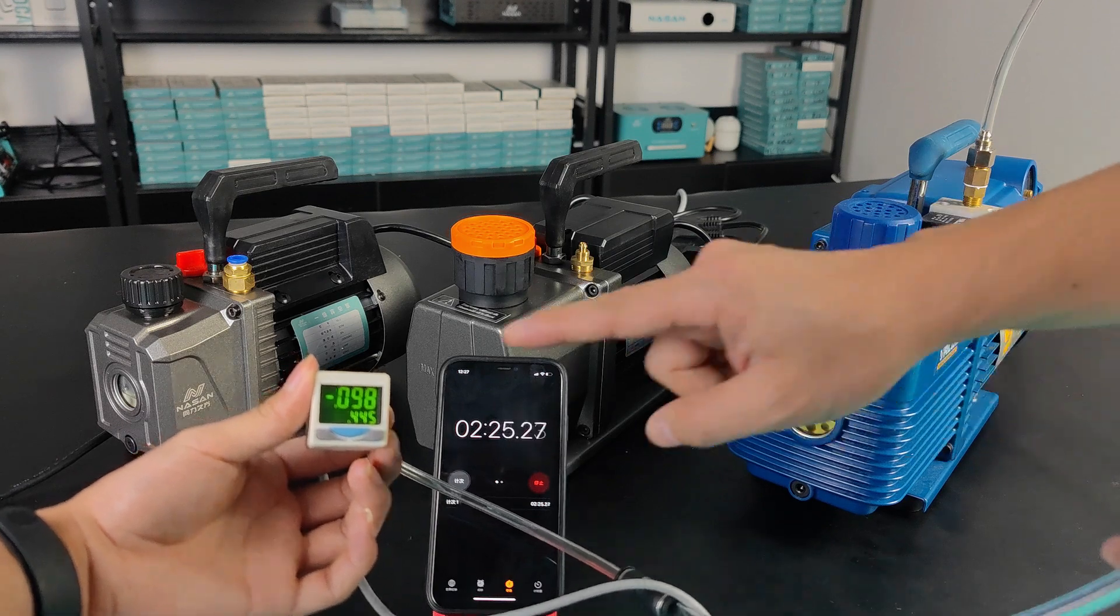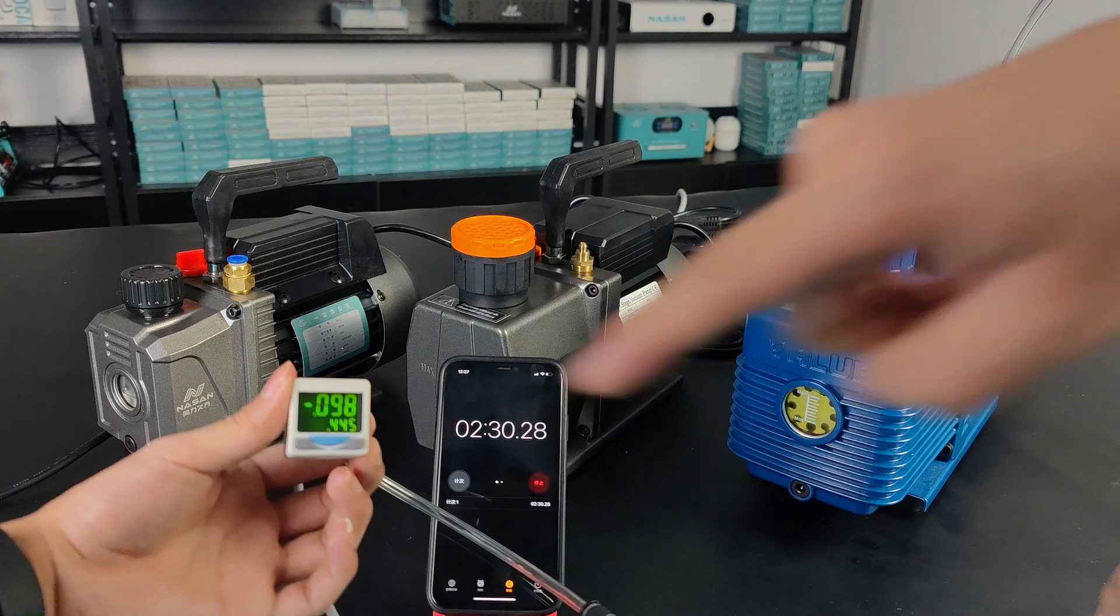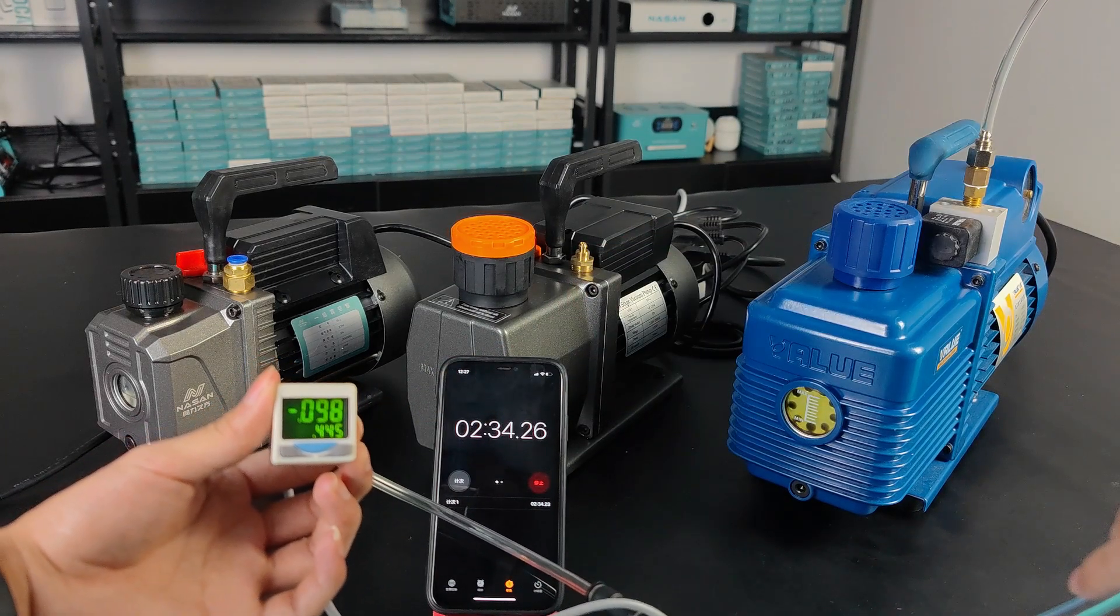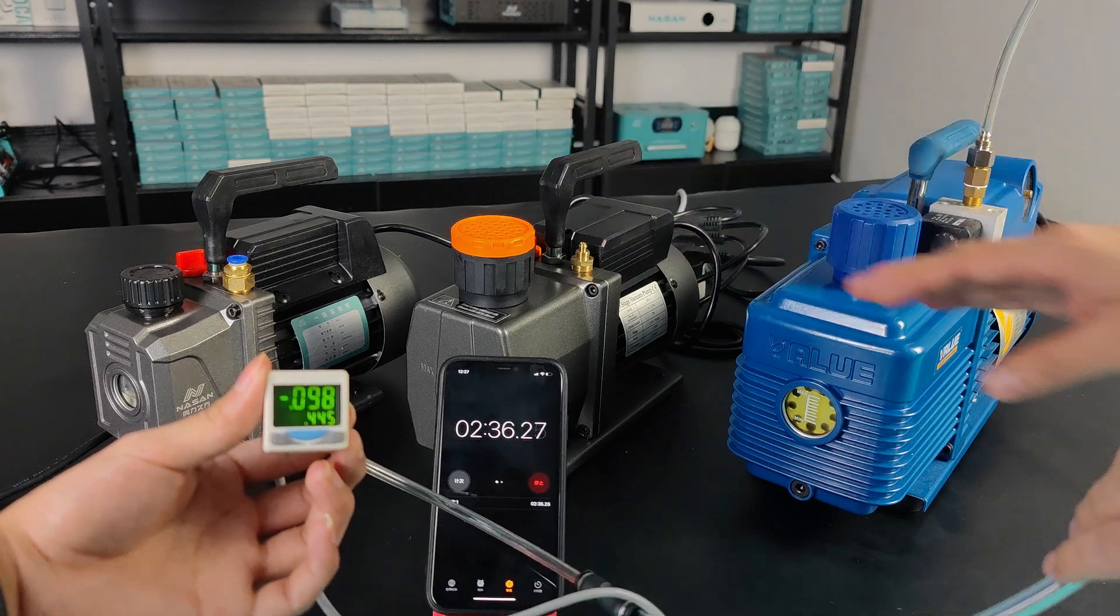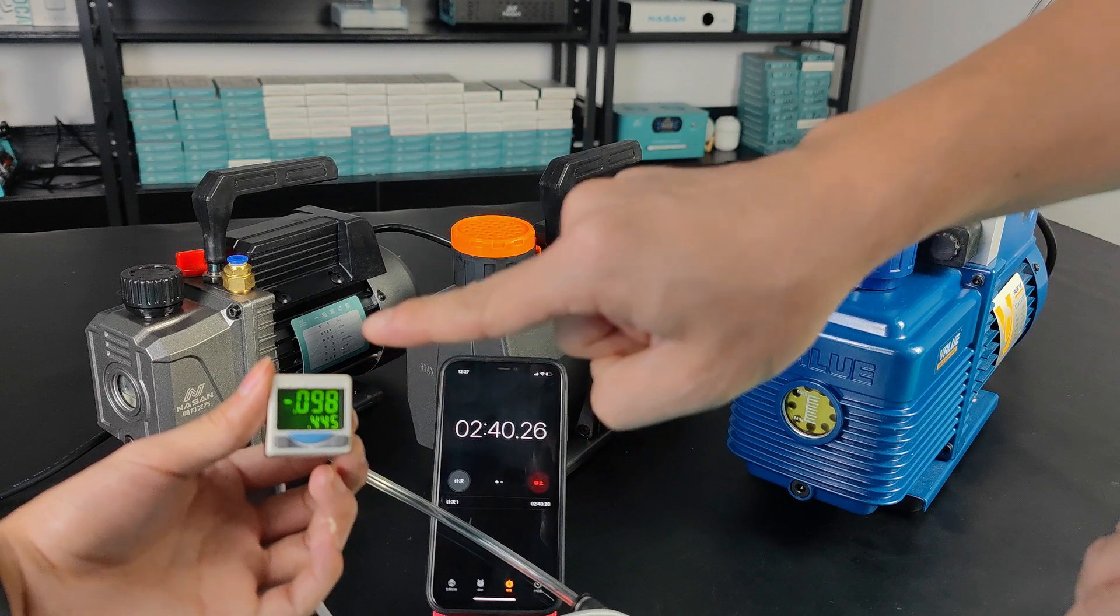Right, it's not jumping. It's showing 98 kPa. So when you select the vacuum pump, remember that the vacuum value is the most important point because not every pump can reach this 98.